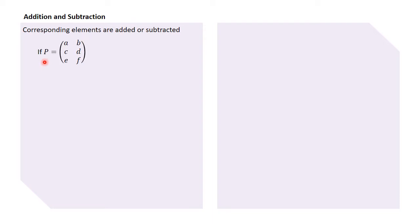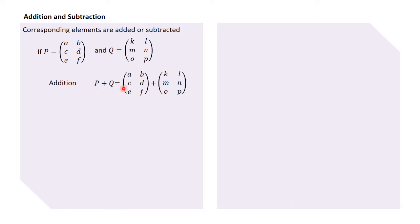For example, given matrix P which has elements a, b, c, d, e, f and matrix Q with elements k, l, m, n, o, p, and we want to do the addition — P plus Q would be equal to adding the corresponding elements: a plus k, b plus l, c plus m, d plus n, e plus o, and f plus p.